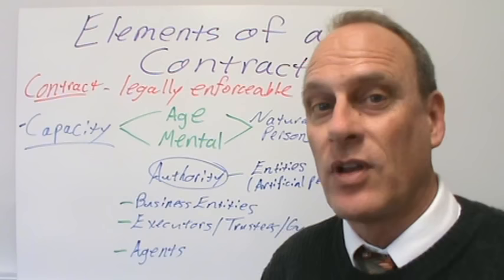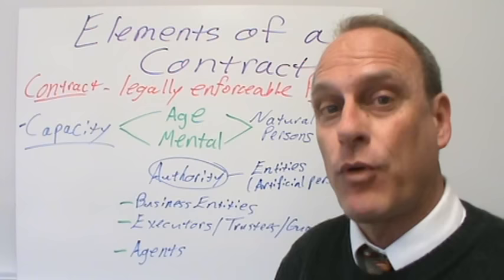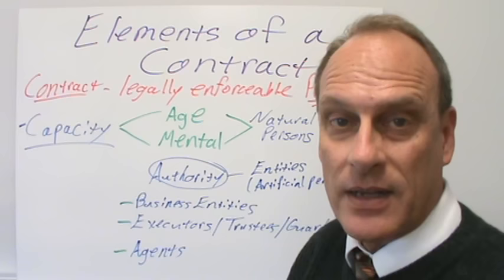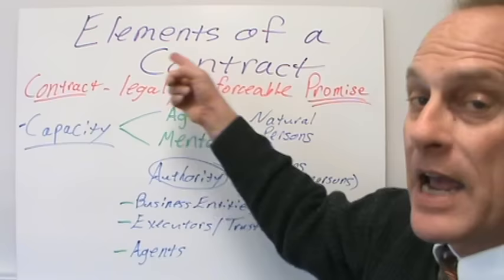Elements of a contract. Before we talk about the elements of a contract, first we have to understand exactly what a contract is. A contract is very simple — it's a promise. When you hear the word contract, think of the word promise. But it's a promise that is legally enforceable under the law. And if there's a breach, then the law will allow a remedy for that breach. So a contract is a legally enforceable promise.